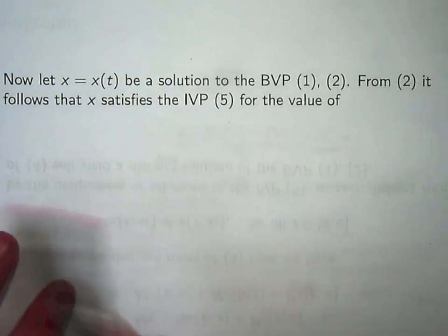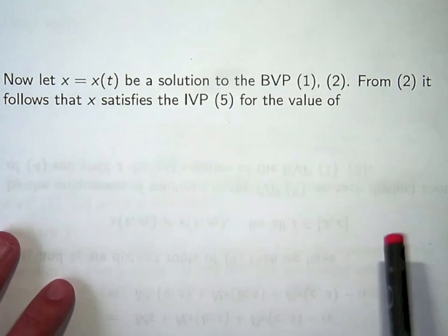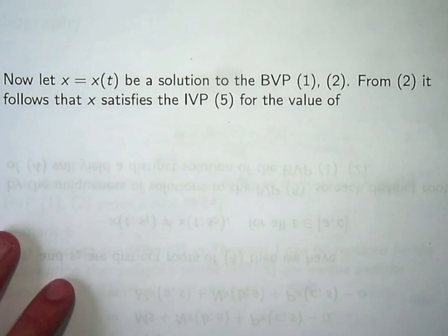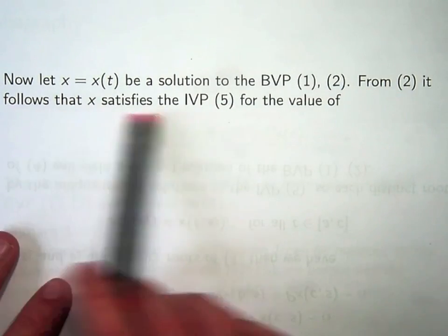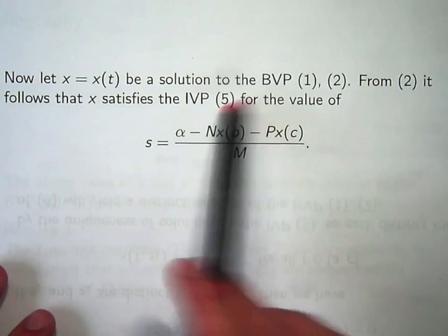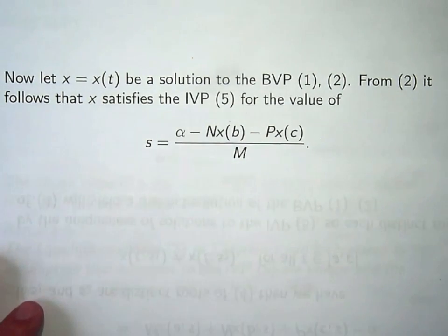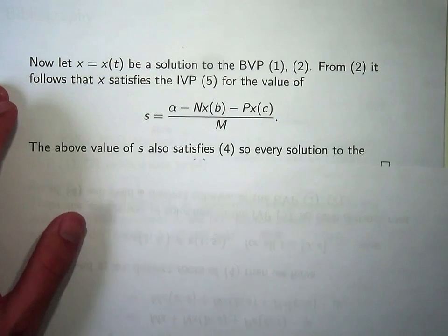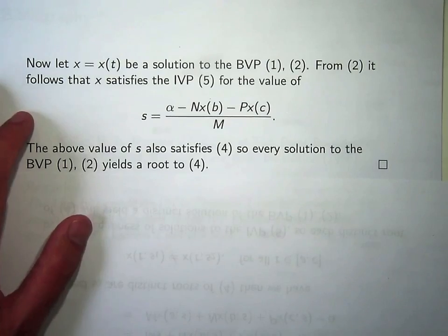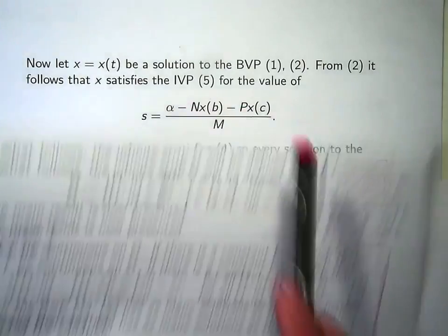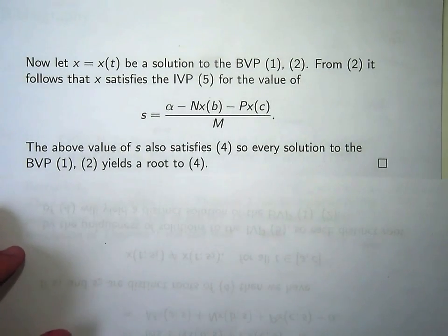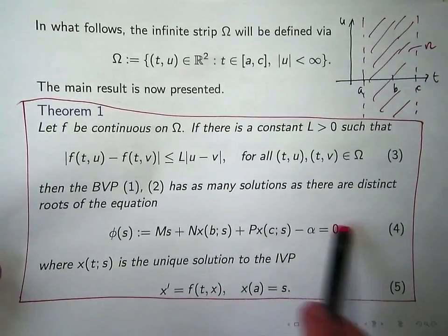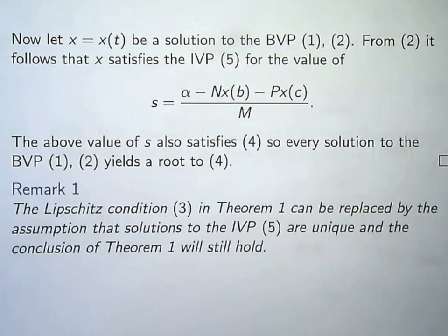Now, let's sort of go the other way. Let x be a solution to the boundary value problem. What we want to do is show that equation 4 is satisfied. So from the initial conditions, it follows that x satisfies the initial value problem 5 for this value. So essentially all we've done there is taken the boundary conditions 2, we've rearranged them, and we've made x(a) the subject, and obviously this will hold then for this value of s. Now, the above value of s also satisfies, it can be shown that it satisfies 4. So you just take this, you replace s in here with this, and then you'll get everything cancelling out. So what that means is that this value of s also yields a solution, it is a solution to equation 4. So that's the end of the proof.